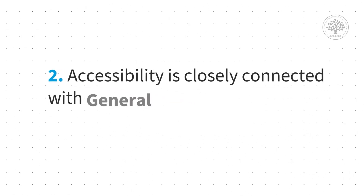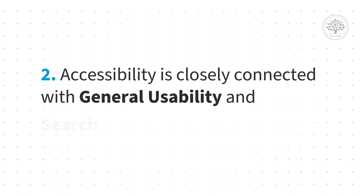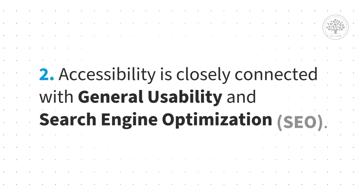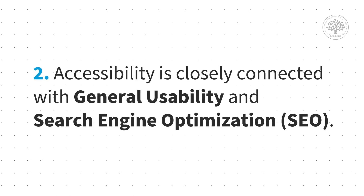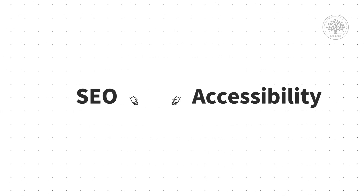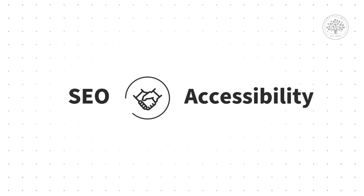The second issue is that accessibility is closely connected with general usability and search engine optimization. When we do things to improve accessibility, we end up improving both of these other topics. It turns out that search engine optimization and accessibility have more in common than you might think.